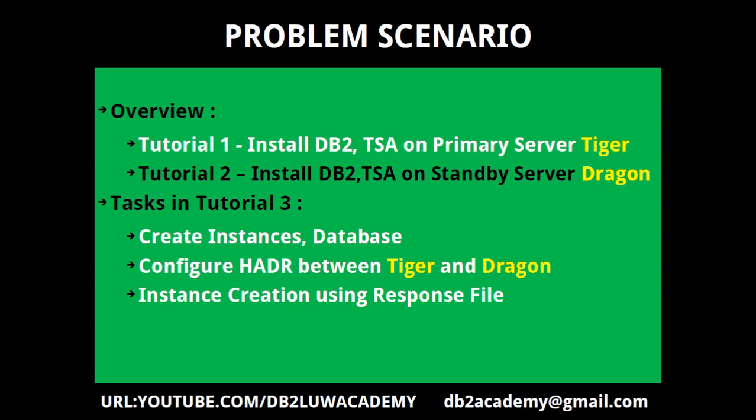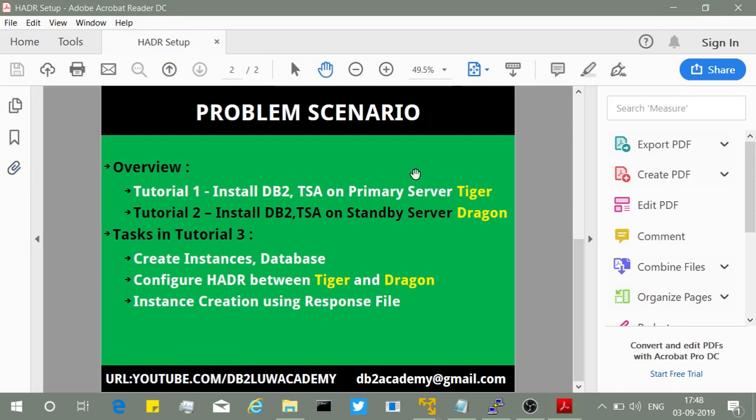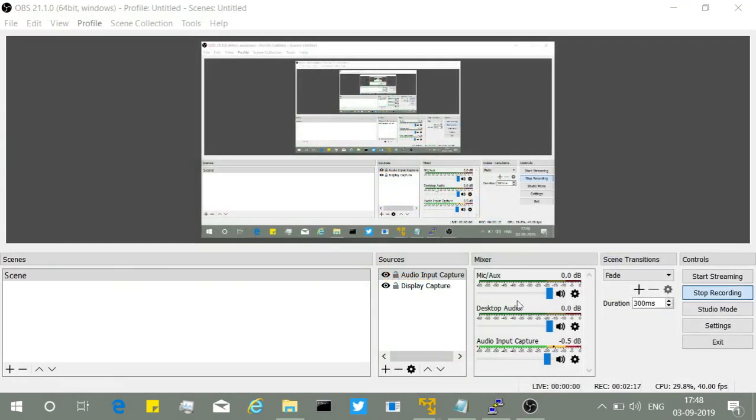We are creating instances, databases, and configuring HADR between tiger and dragon — between primary and standby server. We will use a response file for instance creation. Everyone knows the db2icrt command for instance creation, but instead of that manual approach I'll demonstrate the command line method using a response file. This way, the same response file can be copied to the standby server to replicate the instance creation with minimal manual intervention.